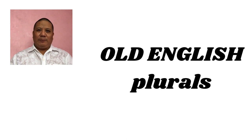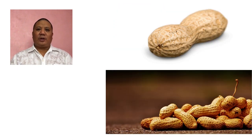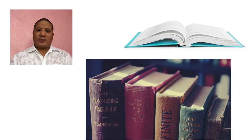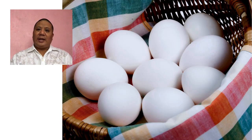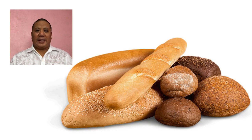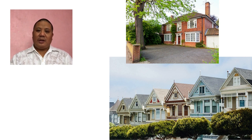Old English had so many more irregular plurals than modern English. For example, the plural of goat was gat, the plural of peanut was penite, the plural of book was beak, the plural of lamb was lambru, and the plural of egg was eggru. There were words that had the same form for both singular and plural — for example, the plural of sheep was sheep, and the plural of house was also house, though house was pronounced as hus at that time.